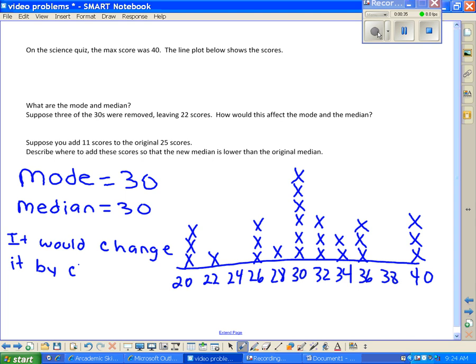Suppose you add 11 scores to the original 25 scores. Describe where to add these scores so that the new median is lower than the original median. It would change by changing both the mode and median. The mode is 40 and the median is 32.